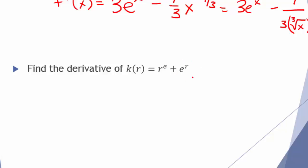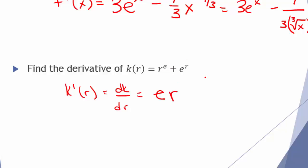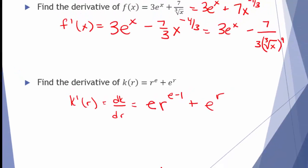The first term, r to the e, has a variable in the base — so we use power rule. The second term, e to the r, is an exponential with the variable in the exponent, so power rule does not apply. When we take the derivative, k prime of r equals e times r to the e minus 1 — that's power rule, dropping e down and subtracting 1 from the exponent — plus the derivative of e to the r, which is e to the r.